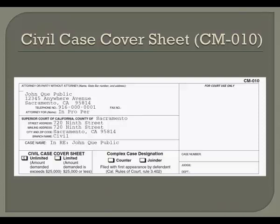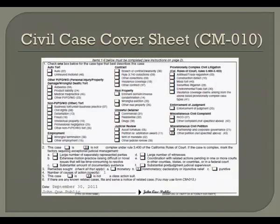In the box that says Case Name, write 'In Re' and then the full present name of the person whose name is being changed. In the box below that says Civil Case Cover Sheet, check the box that says Unlimited. Although your case is not asking for any money, this box must be checked because the old municipal courts that gave way to limited civil cases did not have the power to change a name. In the box below in the lower right-hand corner, check the box that says Other Petition. No other boxes should be checked.